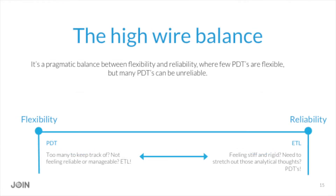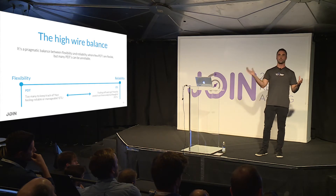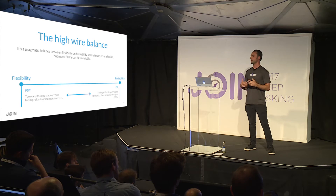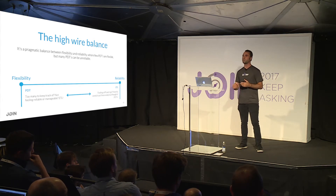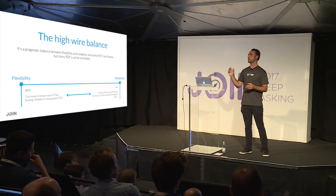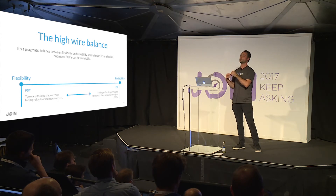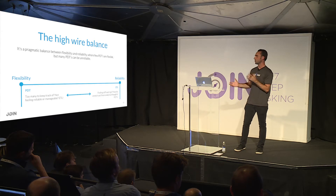What it comes down to is this balancing act: a pragmatic balance between flexibility and reliability. Few PDTs are flexible, but many PDTs can be unreliable. You build a derived table, it takes a while, you persist it, then you need parts to be dynamically built from filter input, so you add another EDT — and all of a sudden managing the schedule of when everything should build becomes very complicated and backs up the database. On the other hand, the ETL has reliability but isn't as easy for ad hoc analysis.